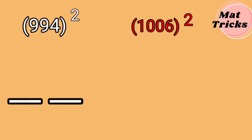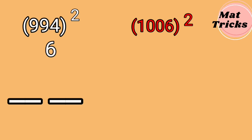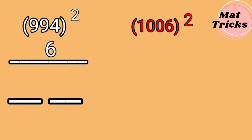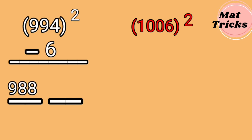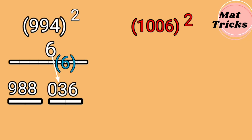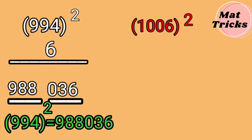Write 2 blanks. The difference between 1000 and 994 is 6, so write 6 under 994. Since 994 is less than 1000, we have to subtract: 994 minus 6 is 988. Write it in the first blank. The second operation is squaring: write 6 square. 6 square is 36, but here we have to write 3 digits, so write 036 in the second blank. Therefore, 994 whole square is equal to 988,036.